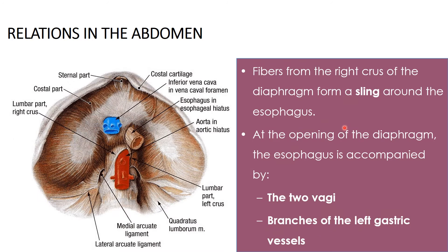Fibers from the right crus of the diaphragm form a kind of natural sphincter — like a sling around the esophagus. Accompanying the esophagus at the level of T10 are the two vagal trunks and branches of the left gastric vessels.